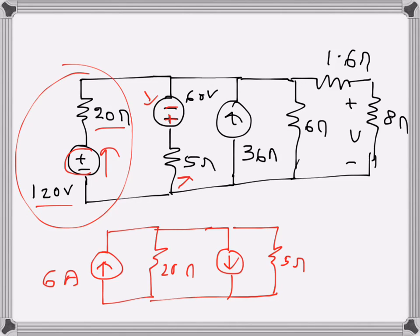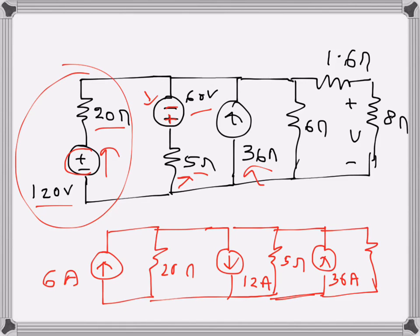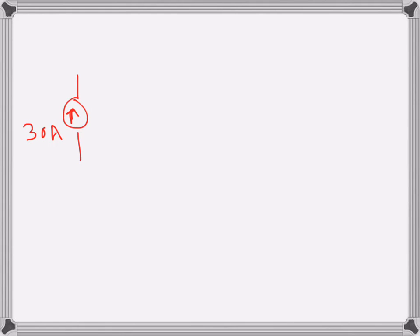The second current source value is 60 volts divided by 5 ohms, which is 12 amps downward. We also have the existing 36-amp current source. Now we have three parallel current sources: 36 amps and 6 amps in one direction, and 12 amps in the opposite direction. Combining them: 36 plus 6 minus 12 equals 30 amps — that is the resultant current source.